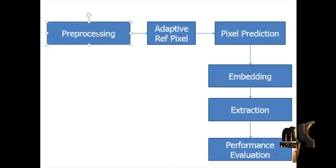In preprocessing blocks, the input image is loaded and the median filter is used to remove the noise from the input test image. The median filter is a non-linear digital filtering technique often used to remove noise. Such noise reduction is a typical preprocessing step to improve the results of later processing. Median filtering is very widely used in digital image processing.